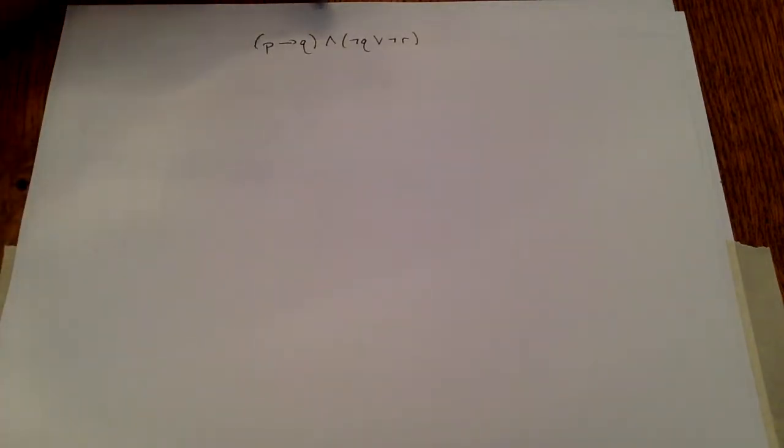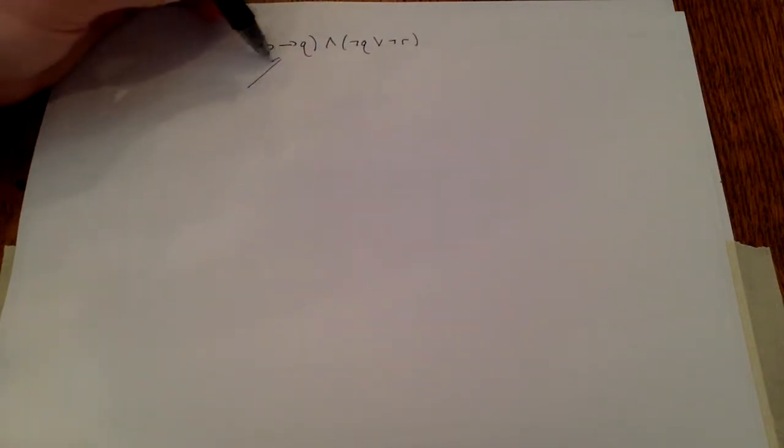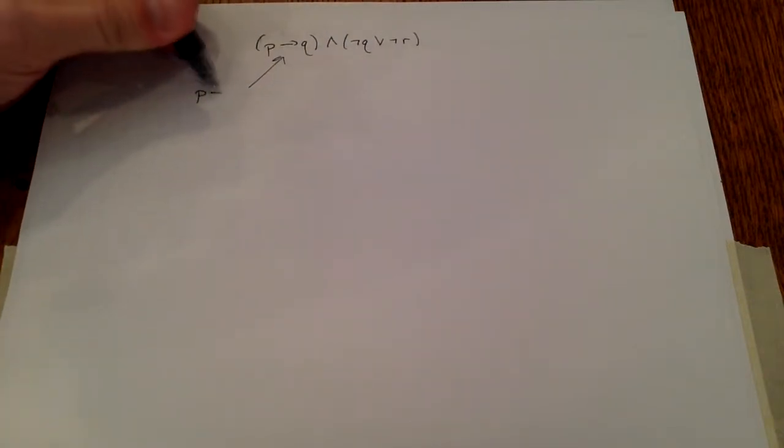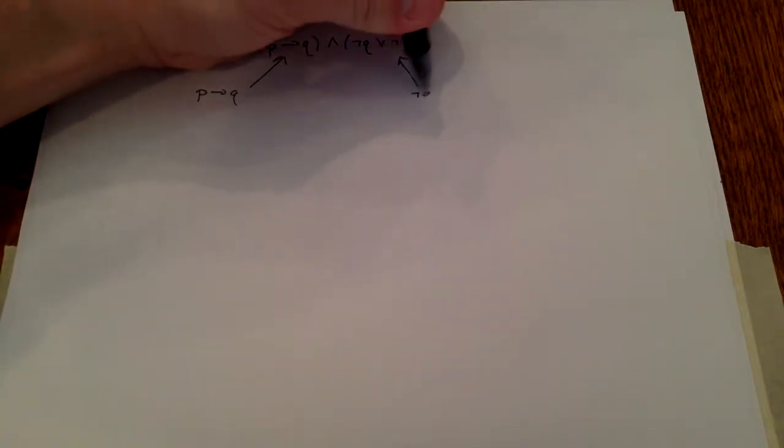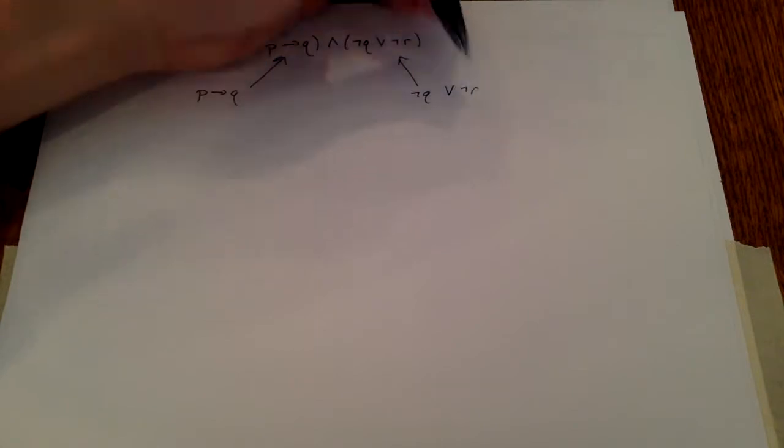To do that, let's consider our compound proposition as follows. I've got two things that are combined by an and. The and is the last thing to be done. So I'm going to split these two things into the proposition P implies Q and the proposition not Q or not R.